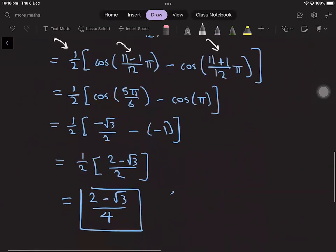This is equal to half, and minus of minus 1 you get plus 1, and then you bring it under a common denominator of 2, so you get half times 2 minus square root 3 over 2. And 2 times 2 gives 4, so the final answer is 2 minus square root 3 over 4.